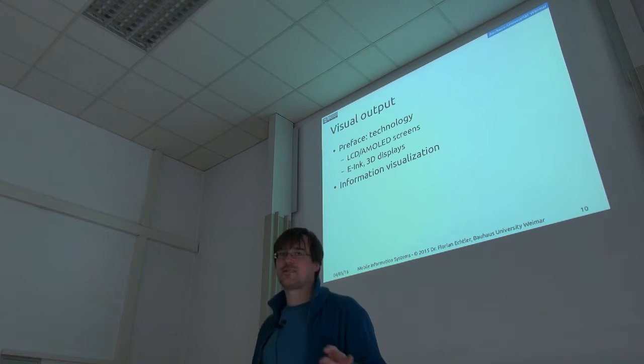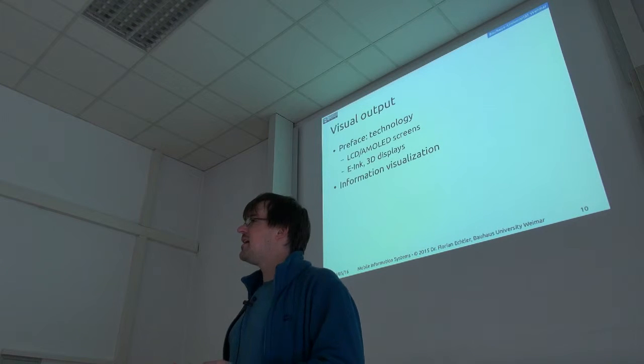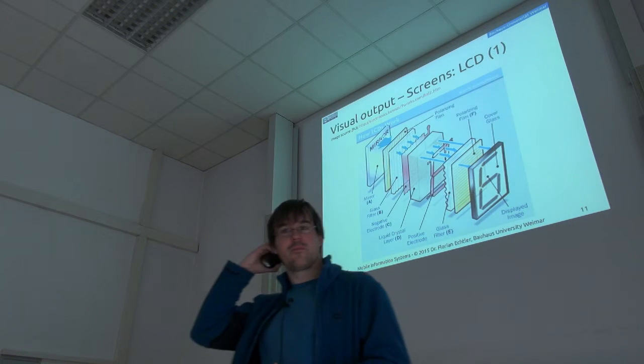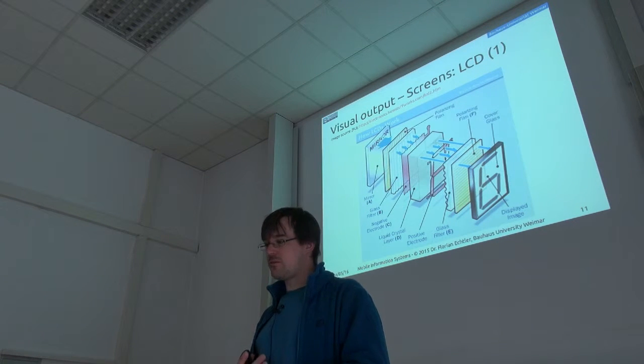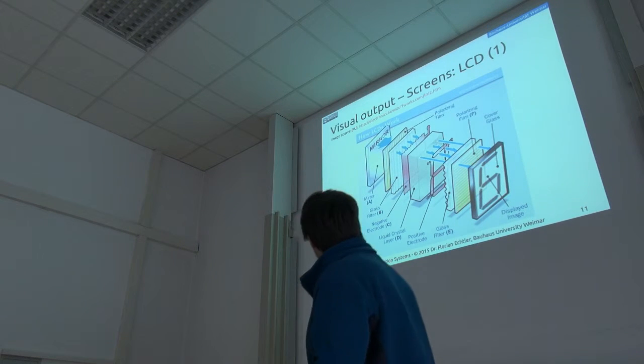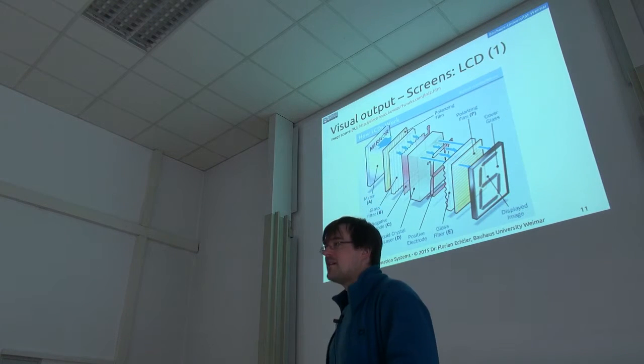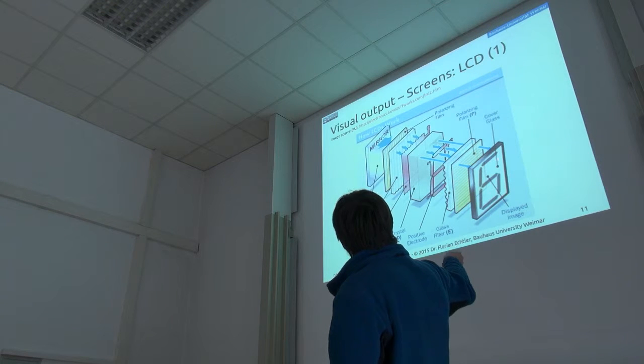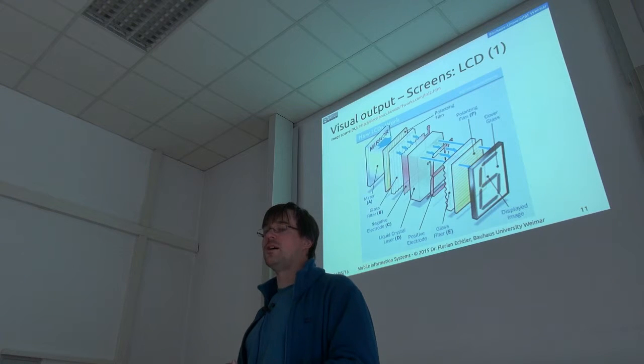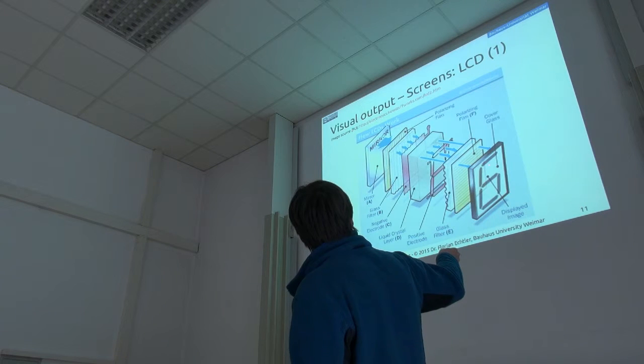So maybe let's deal with output first, because that's the absolutely most common use case. And before that, I'd like to give you a short overview of how displays used in mobile devices actually work. So most screens we use are still LCDs, liquid crystal displays, and they're actually composed of quite a number of different layers. So this example is actually for the really old seven-segment displays, but the same technology applies to common LCD screens. Each segment is just one pixel there.